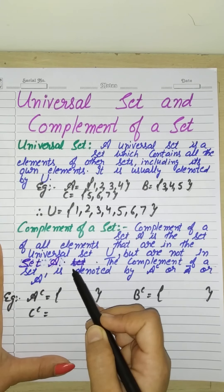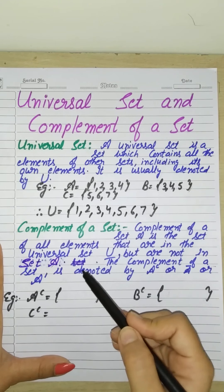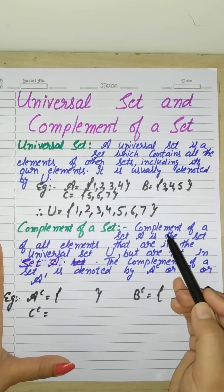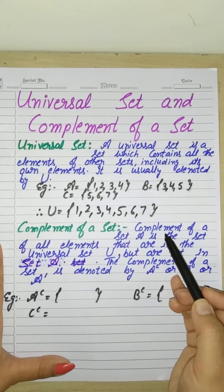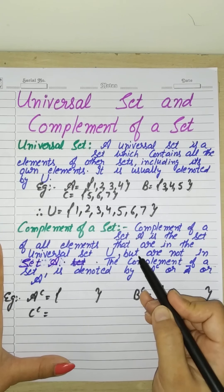I have told you the universal set has all elements. When we have to find the complement of a set, what should we do? The elements in the universal set will be written in the answer, but what is the condition?